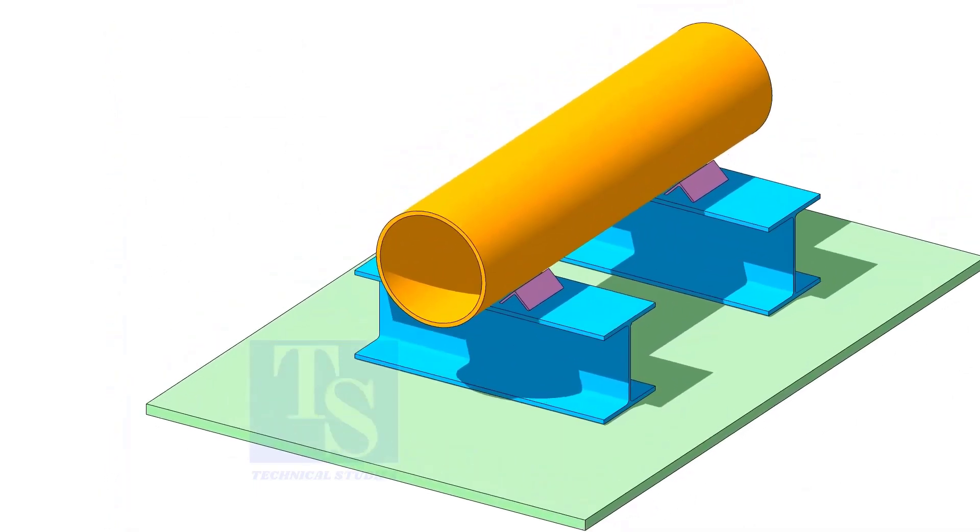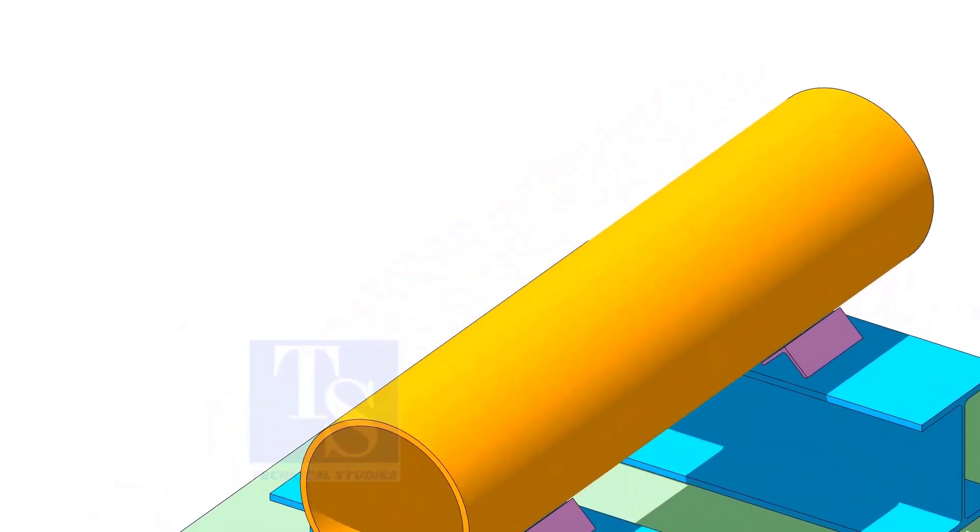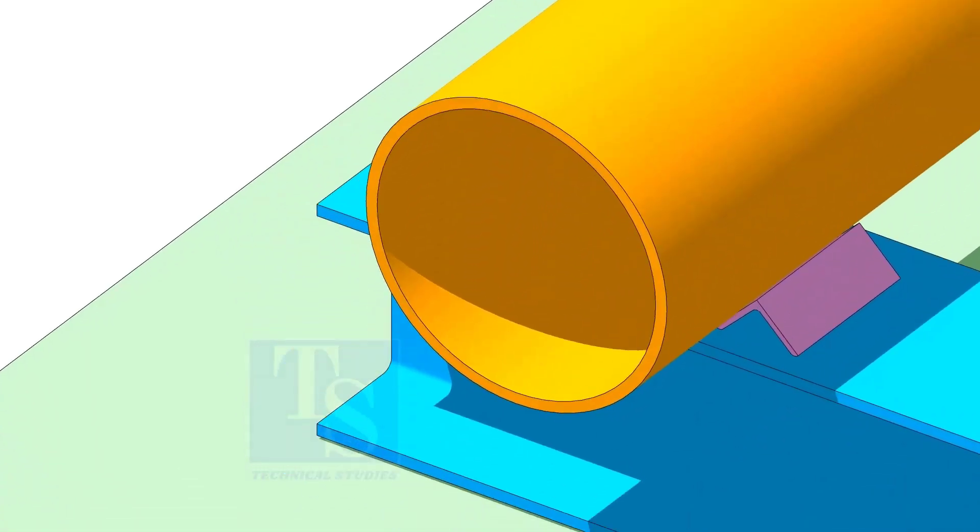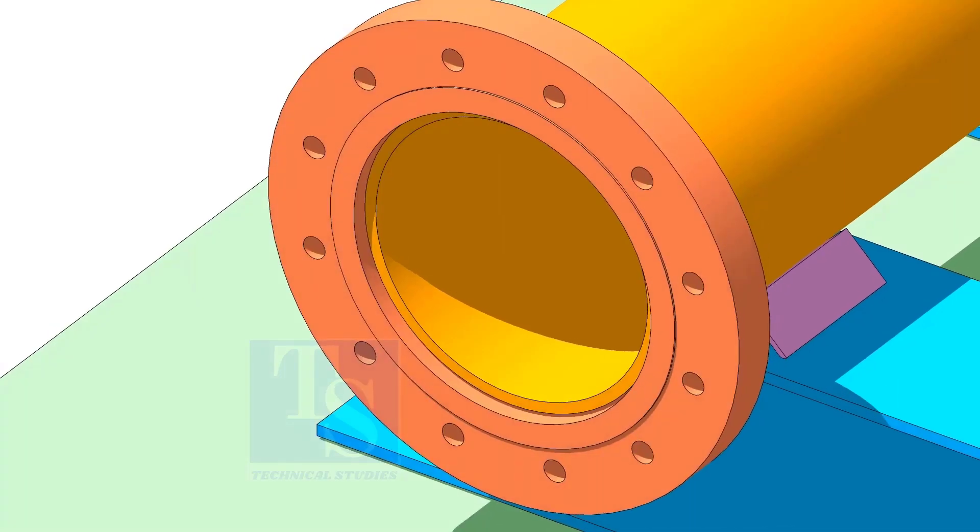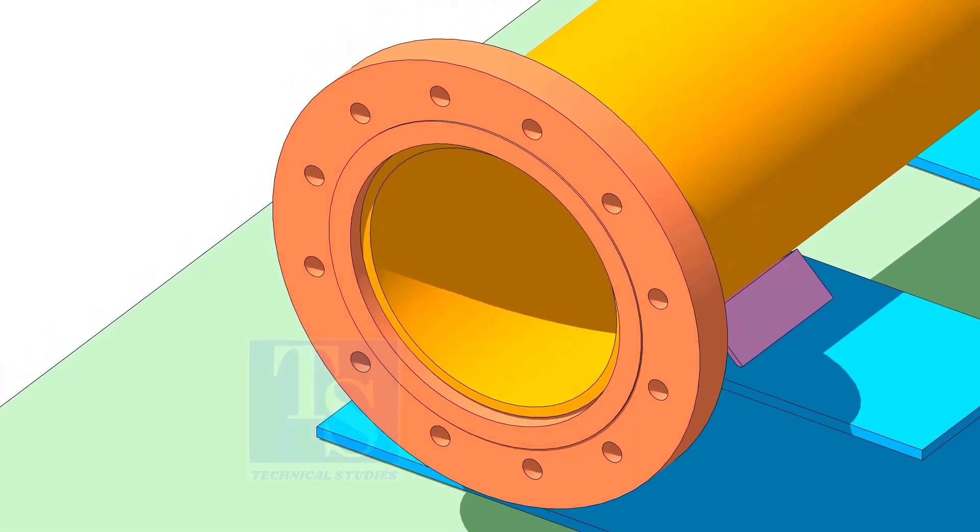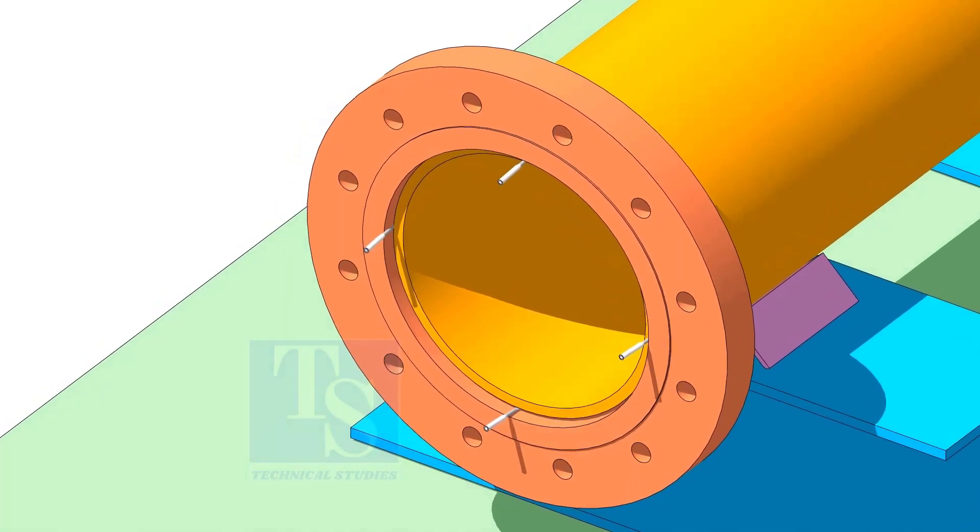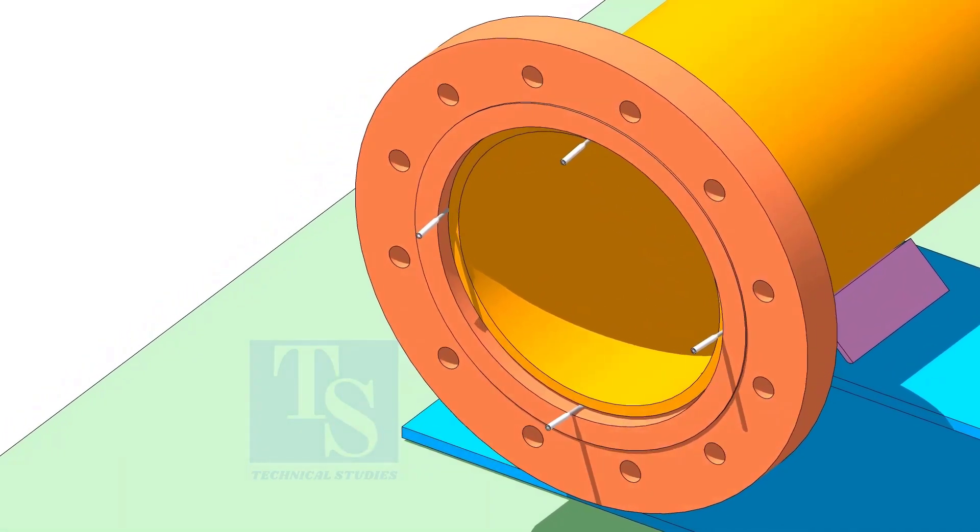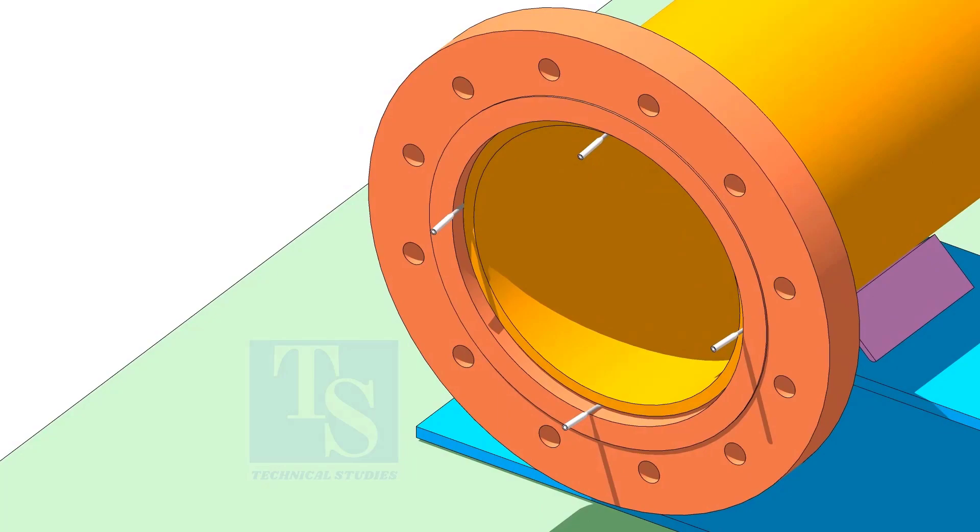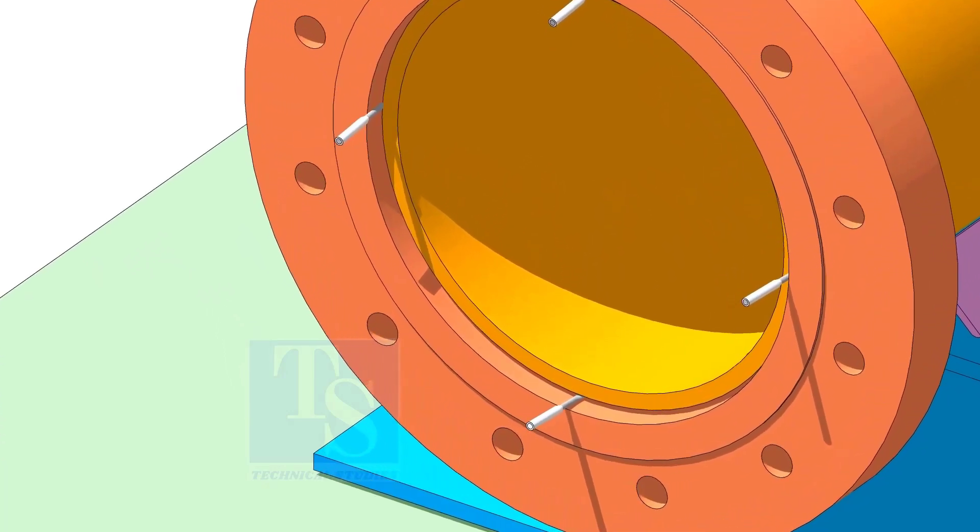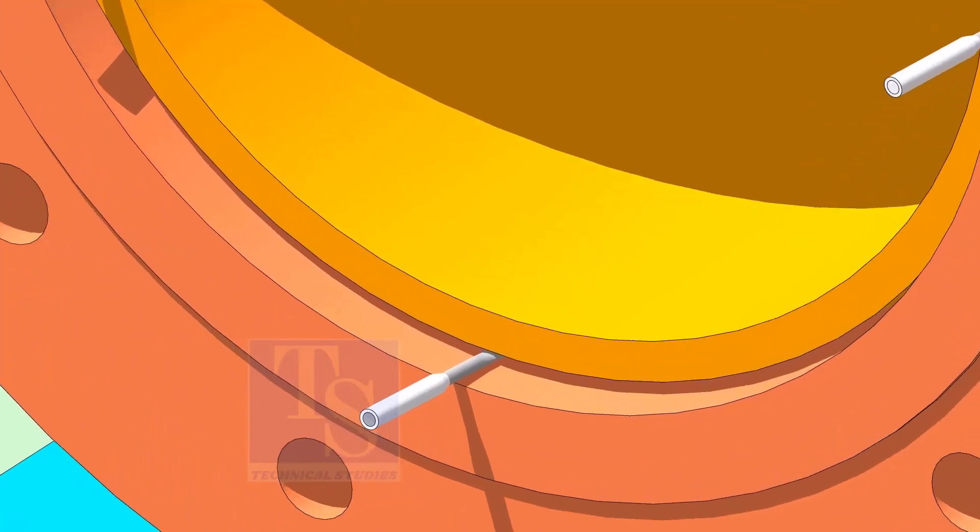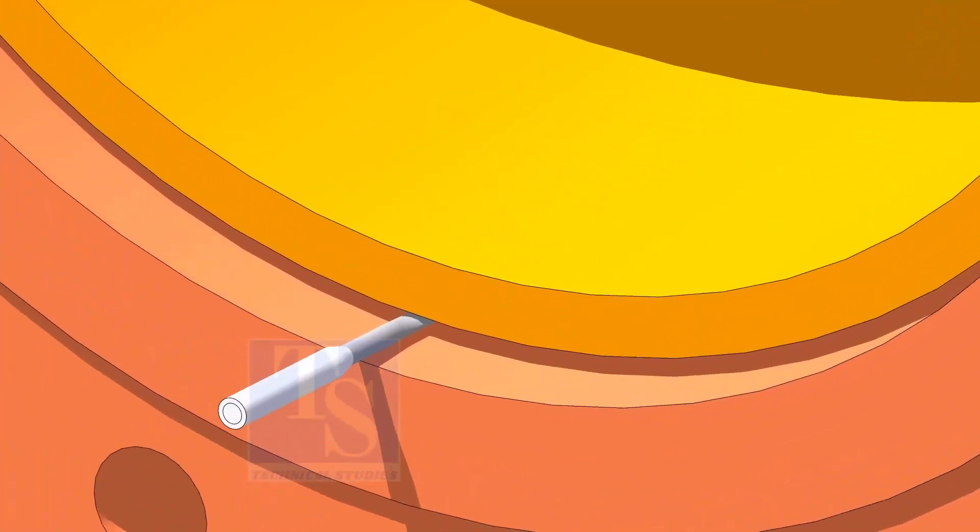Make sure both ends of the pipes are square. Put the flange in its position. Make small wedges from welding rod bits. Insert these wedges in the gap between the pipe and the flange as shown. Make sure the gap is distributed equally around the pipe.